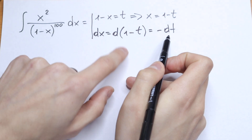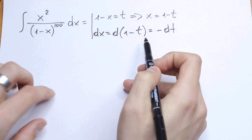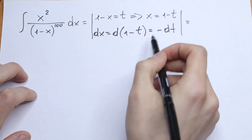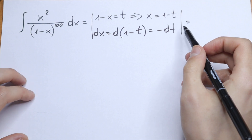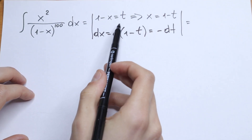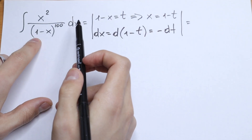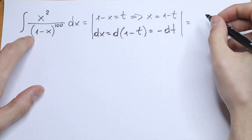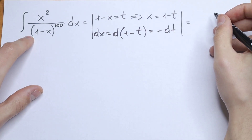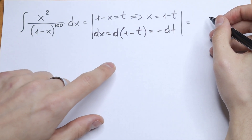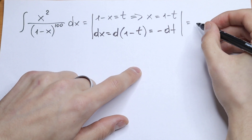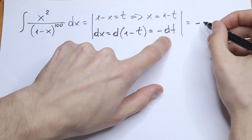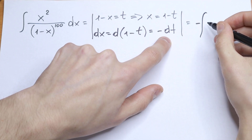Just find the derivative of t because the derivative of the constant 1 is 0. So we have found all of these elements, and let's put all of these changes inside the integral we had in the beginning. We will have a minus sign out front because of minus dt — I write this minus in front of the integral.